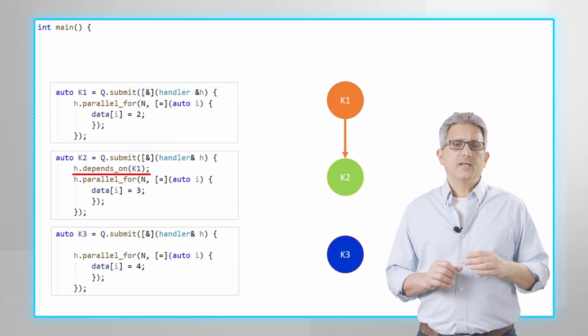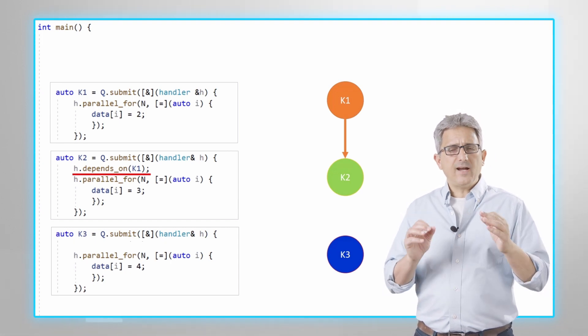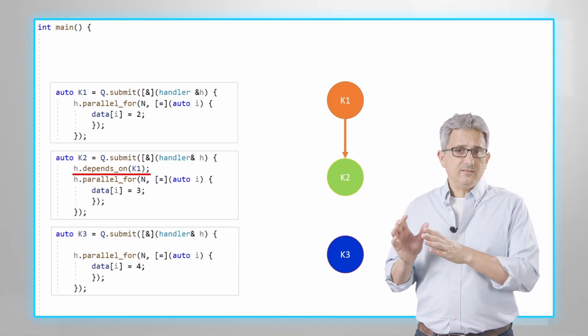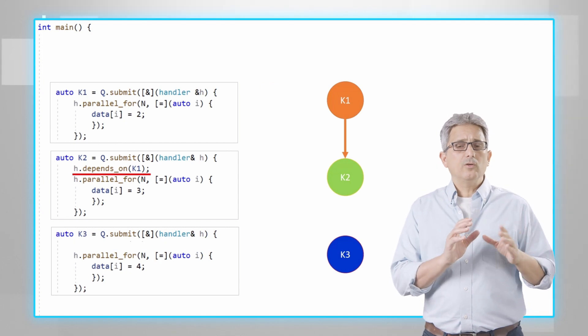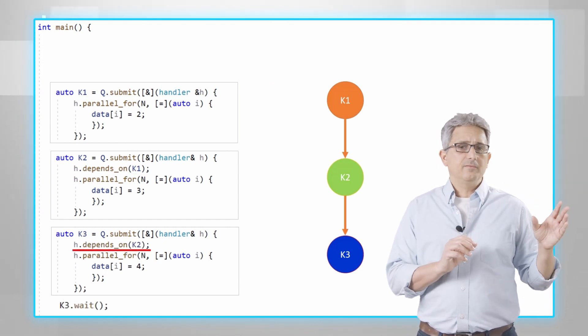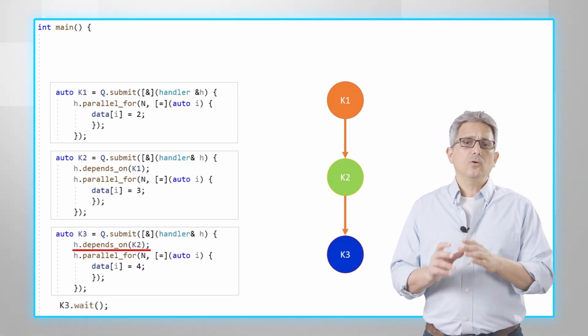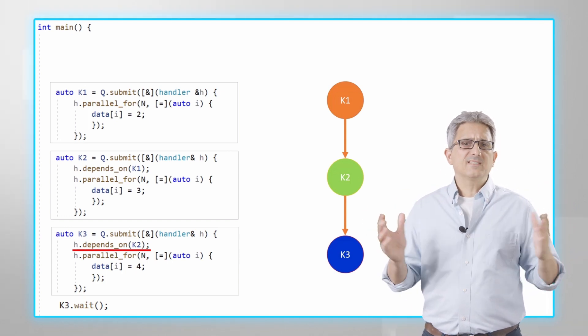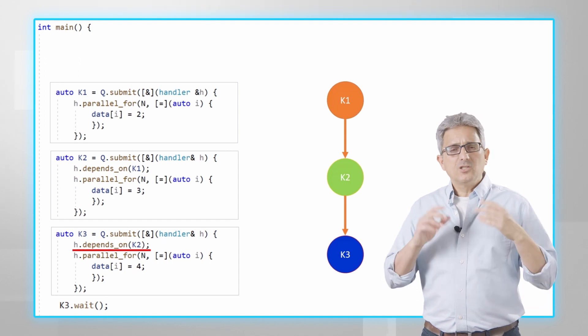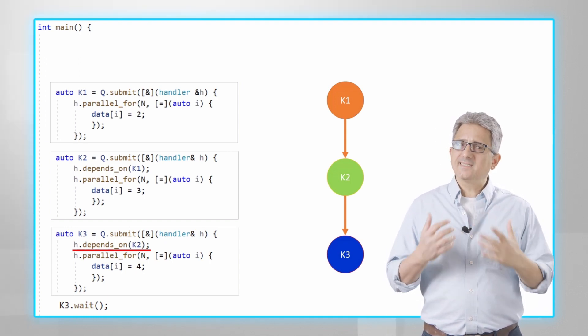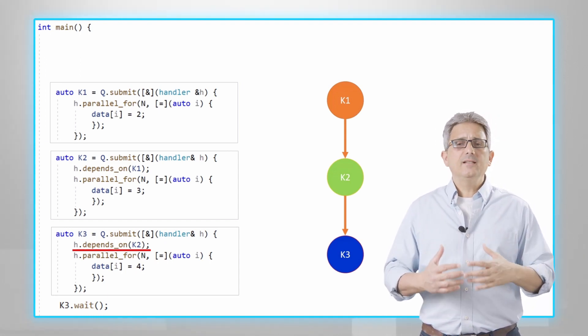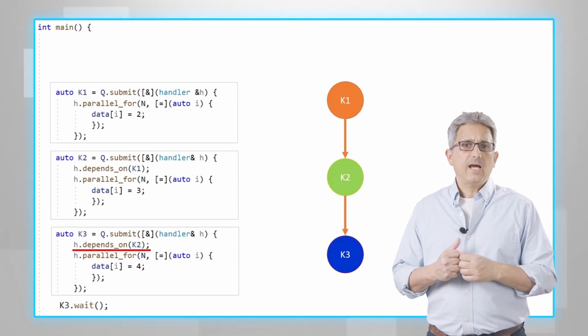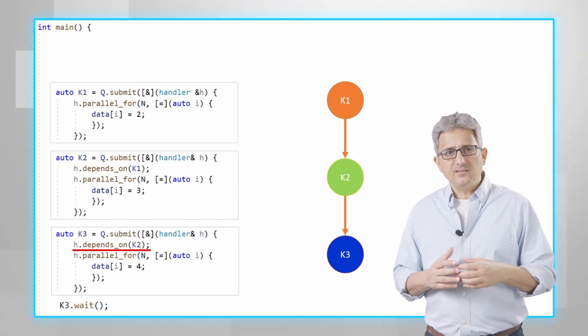And I can define that K2 event is dependent on K1 event and K3 is dependent on K2 and so on, for any flow graph as complex as could be. So now the graph can be executed asynchronously in a non-blocking manner, unless I define the dependency.